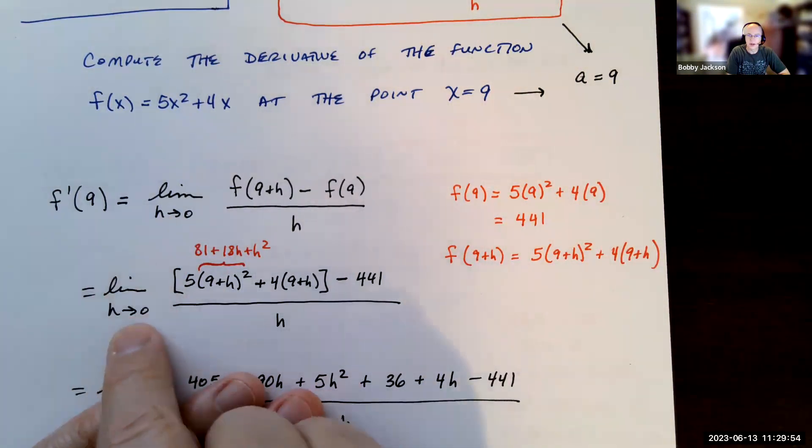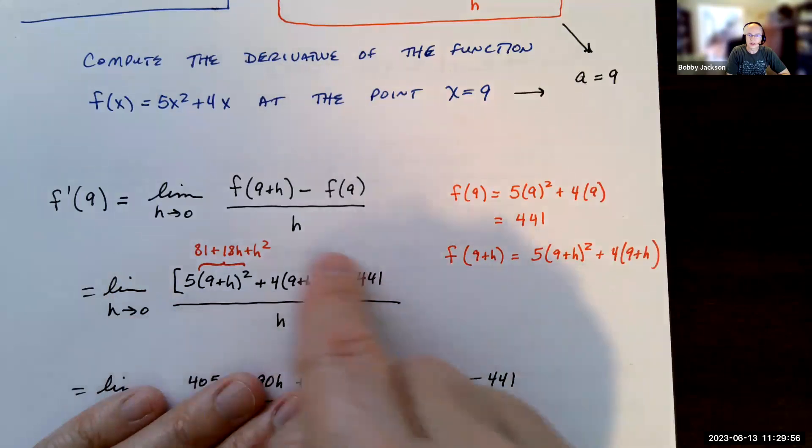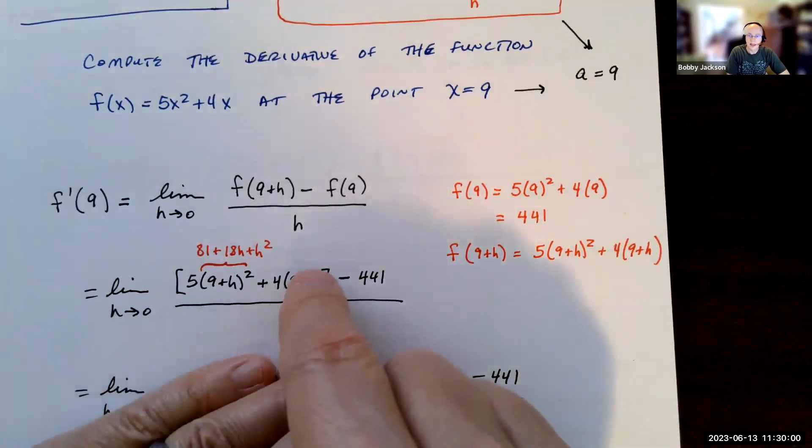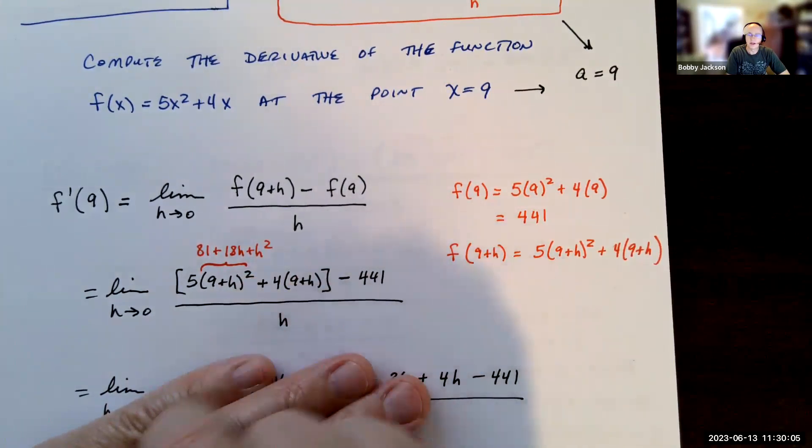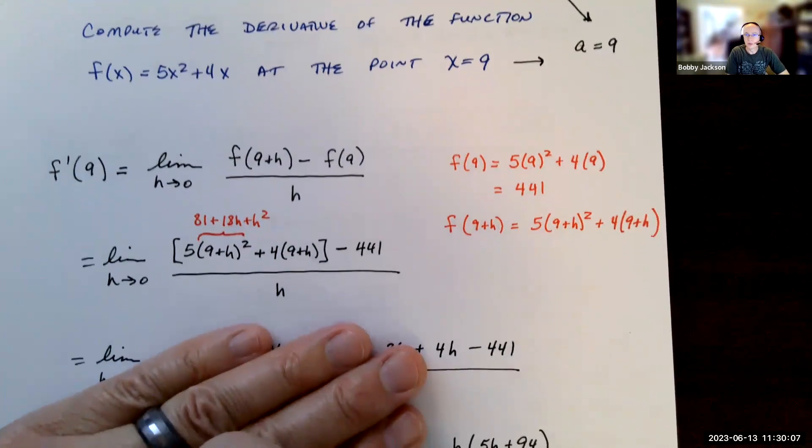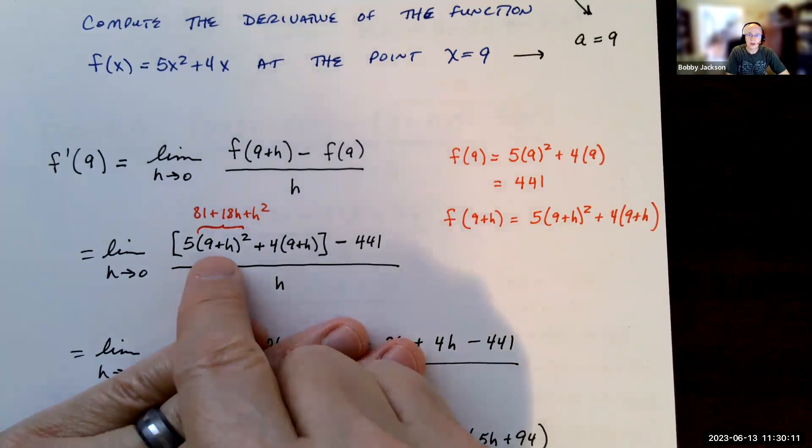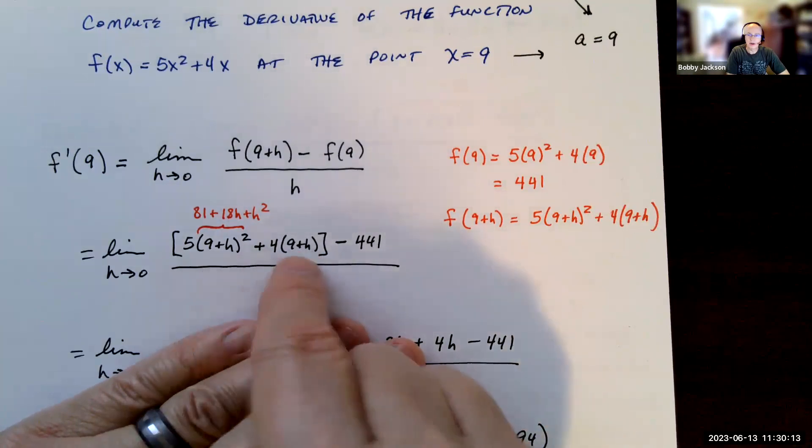So it's the limit as h goes to zero of this stuff. Now it's just a matter of simplifying this, because if I plug in h equals zero, I get zero over zero. You can go ahead and do that and confirm, but we've got to simplify. That indeterminate form means we've got some work to do, not that the limit does not exist. So let's do the work.